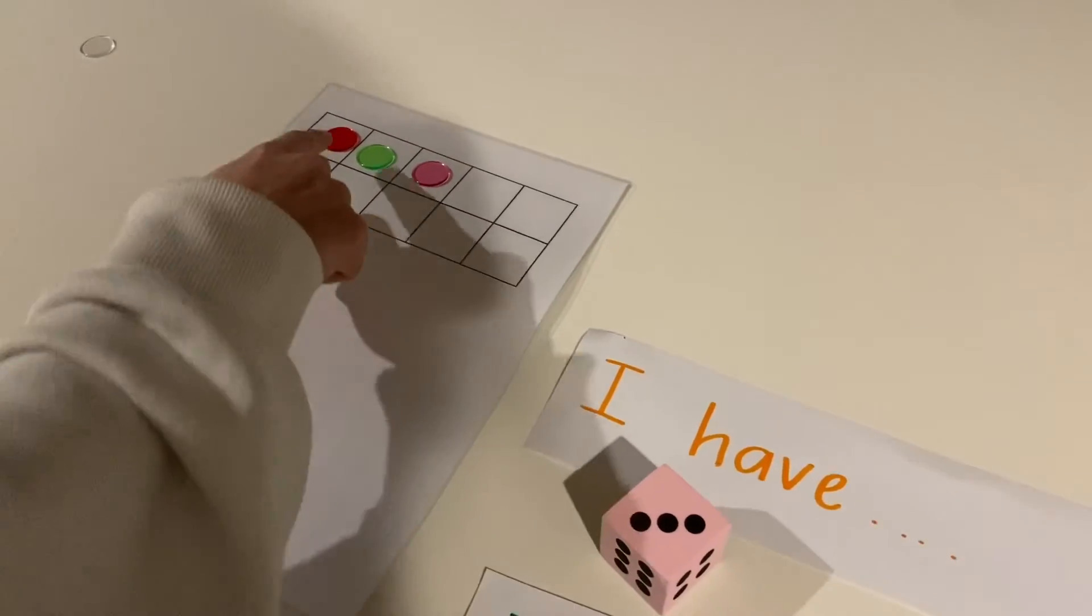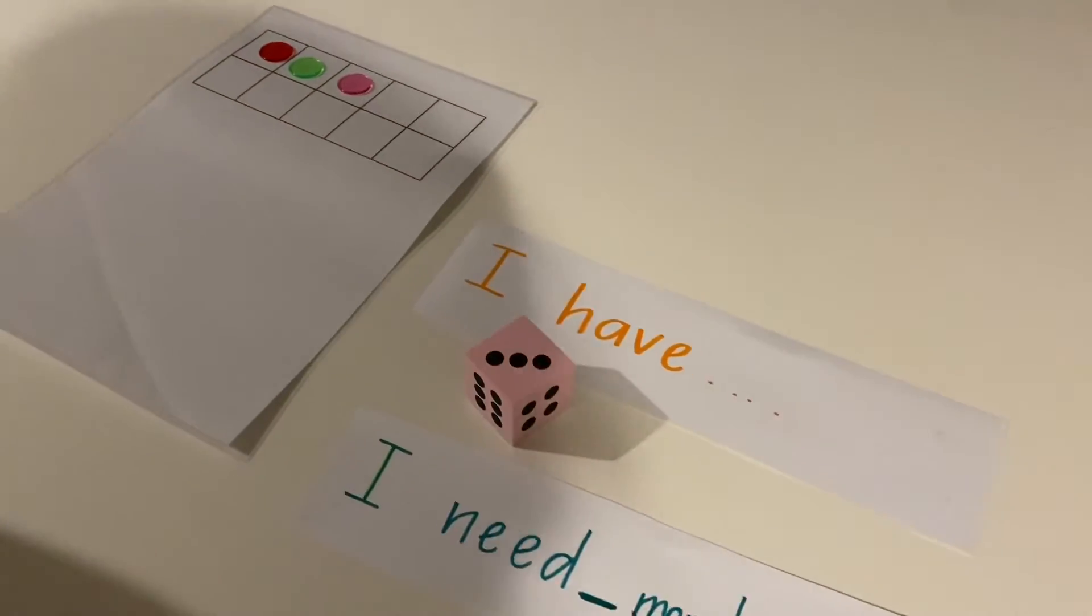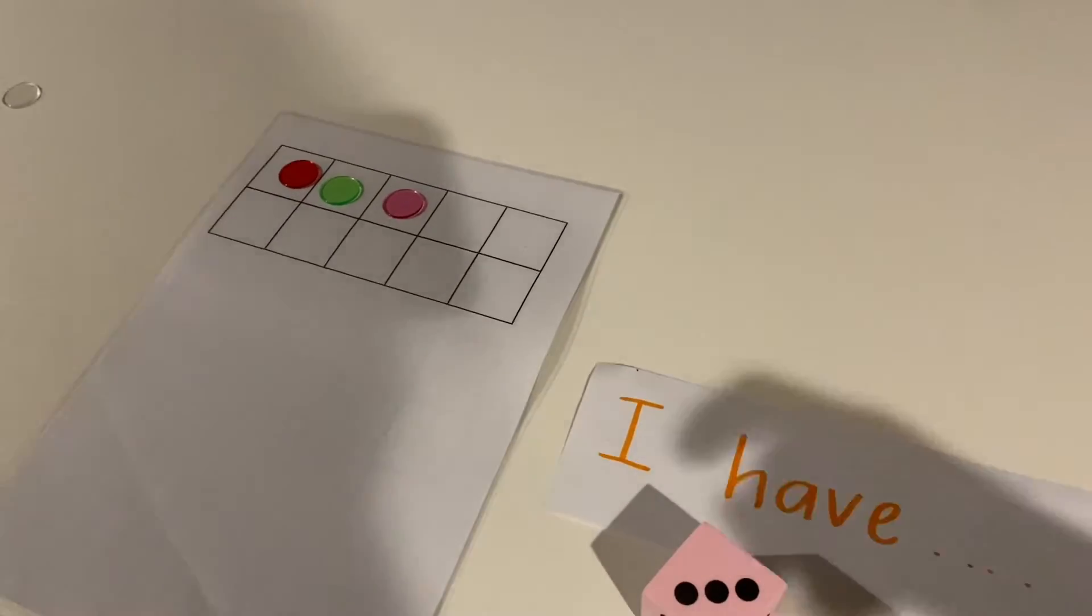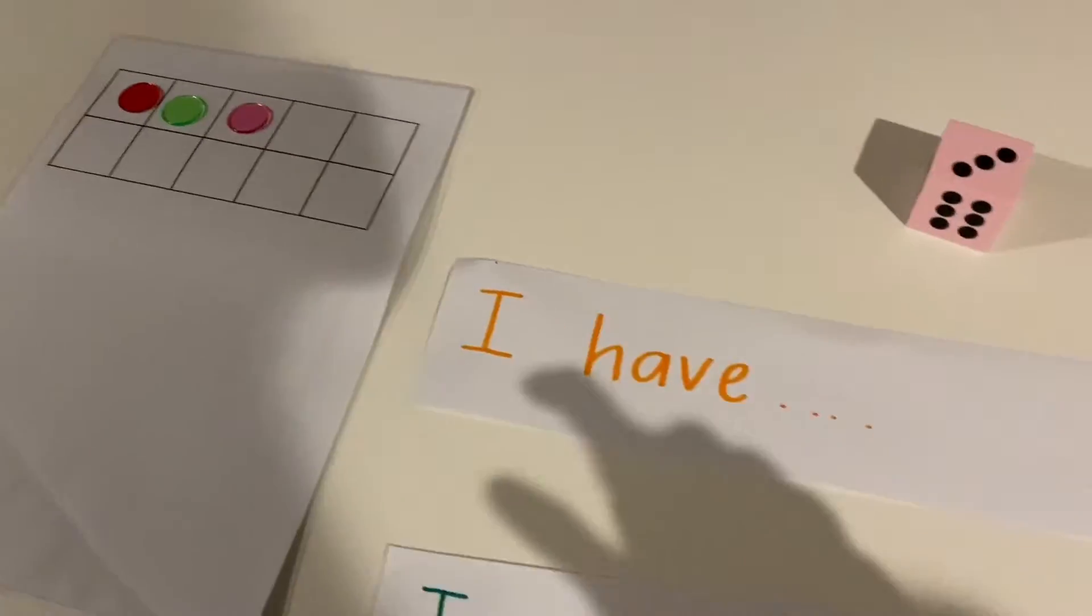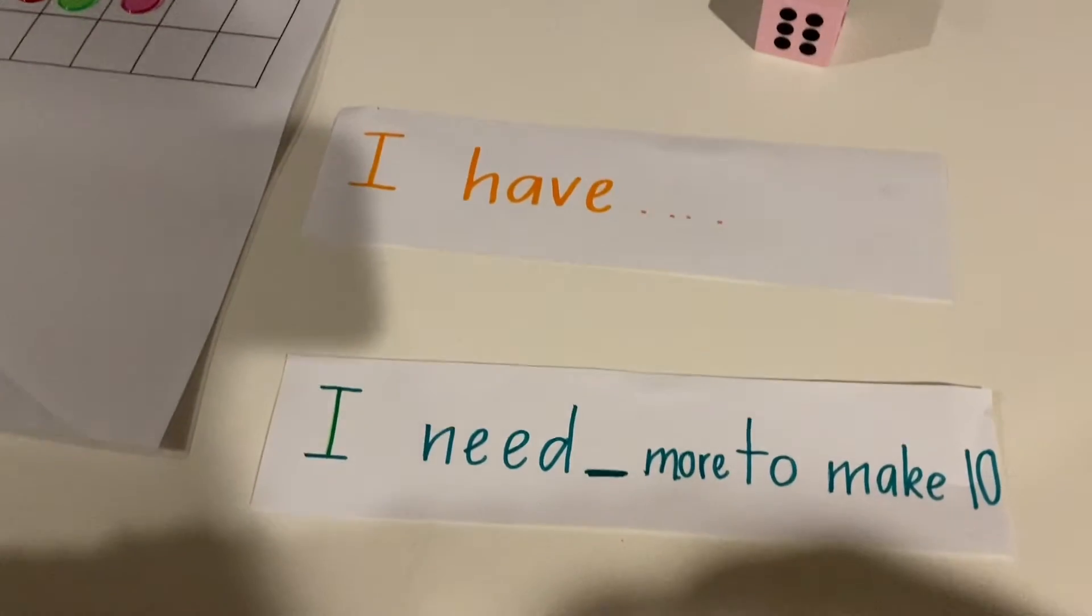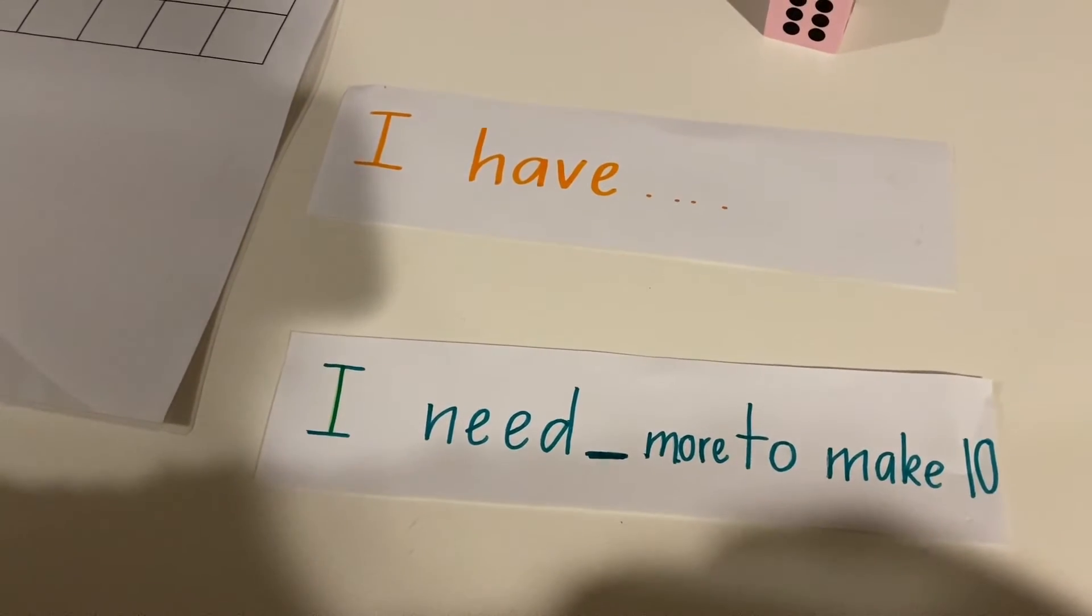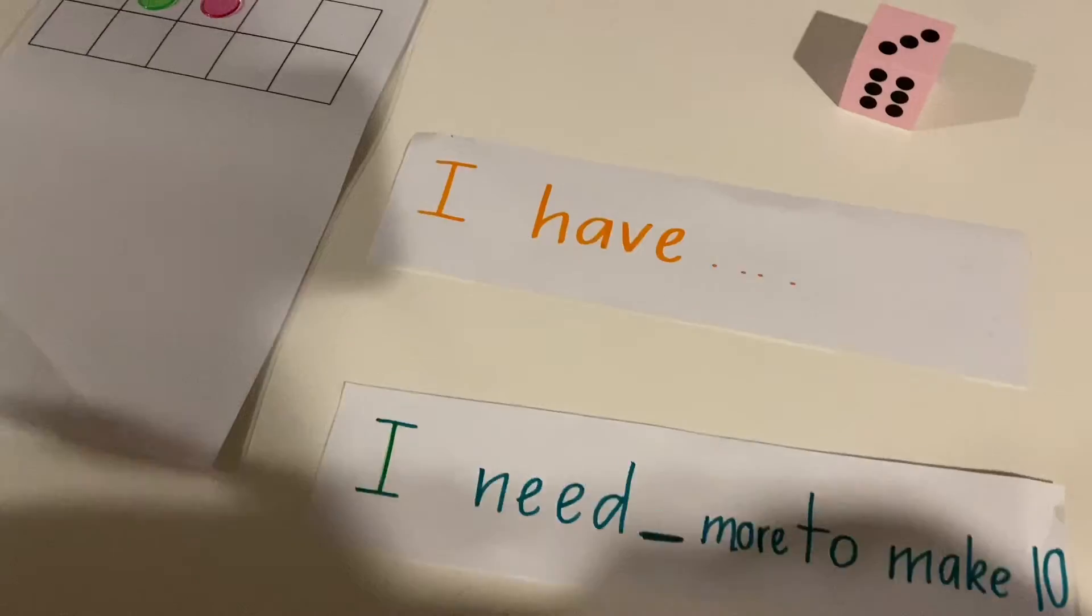Okay off you go. How many do you have? Look and know with your eyes. Three. Okay so remember what we have to say after each turn. I have three. I need seven more to make ten. Good job.